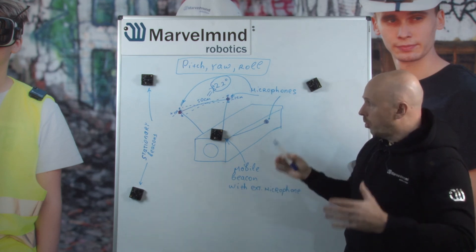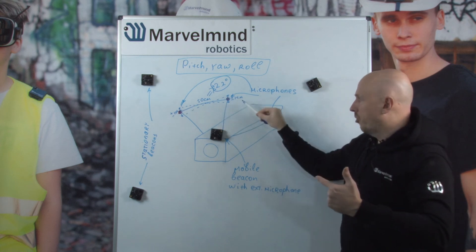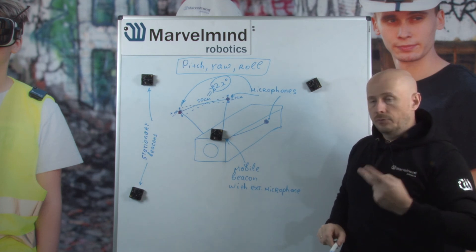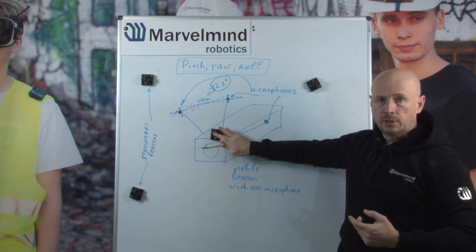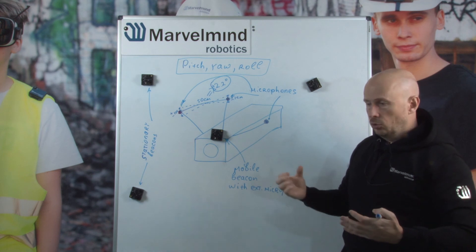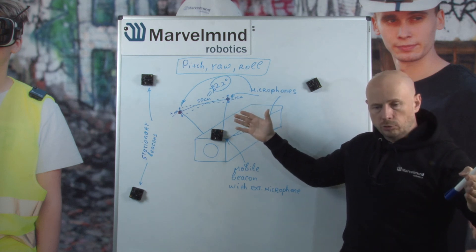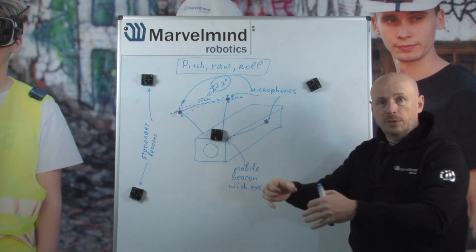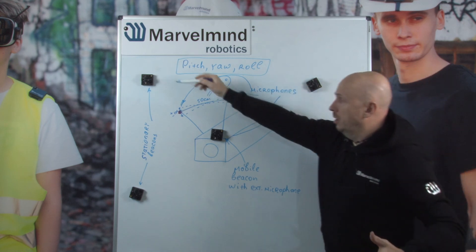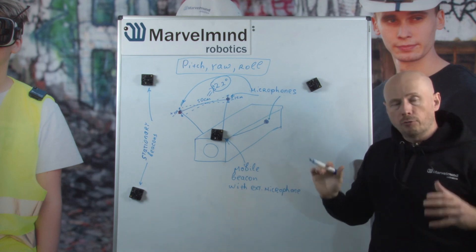So answering overall: yes, it is possible to have pitch, yaw, and roll based on our system. That would require at least three external microphones. To connect three external microphones, you have two options. First, you can connect to one superbeacon, but in this case that one superbeacon would effectively receive three absolutely independent channels. So if in general you would be able to measure up to 30 meters, with three microphones you would reduce the maximum distance to ten meters — ten plus ten plus ten. If the maximum distance in your room is below ten meters, then one superbeacon and three external microphones would be sufficient.